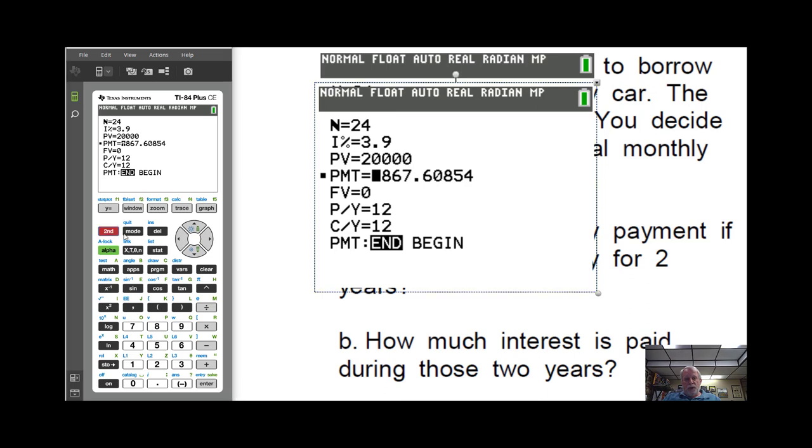So I'm going to go off to the home screen and take that $867.61 and multiply it by the 24 months that I'm going to pay that amount.